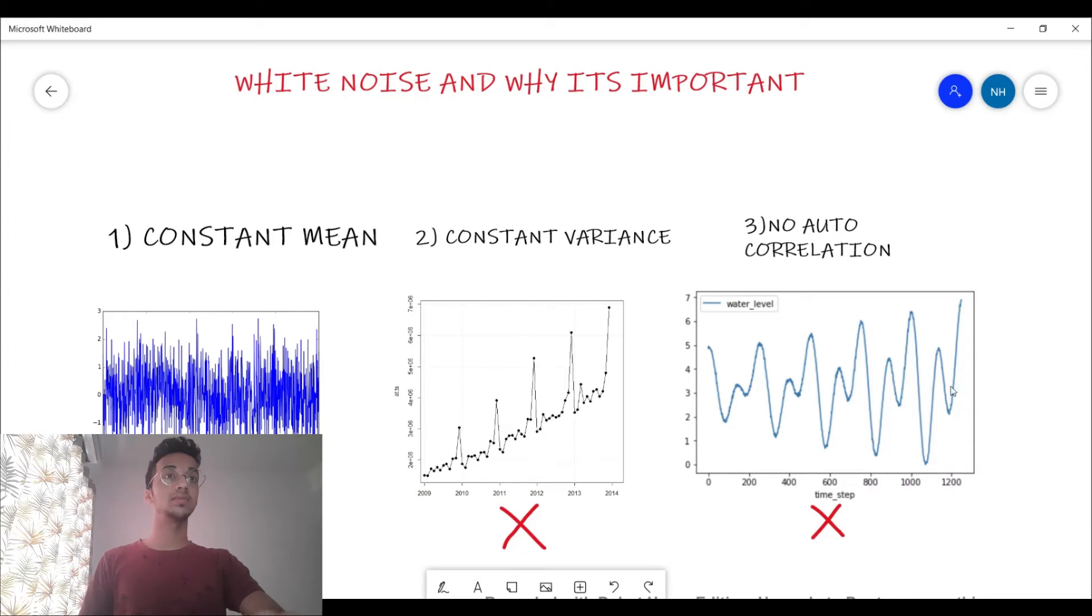The third time series that I'm showing you over here also seems to have somewhat constant mean, but clearly there is autocorrelation. There are repeating peaks over here which means that if you know the value at a particular time step, you can somewhat estimate what the values are going to be in the next time period. There are certain visible patterns. So that's how you can visually identify, but sometimes it might not be possible to do it by visual inspection alone.